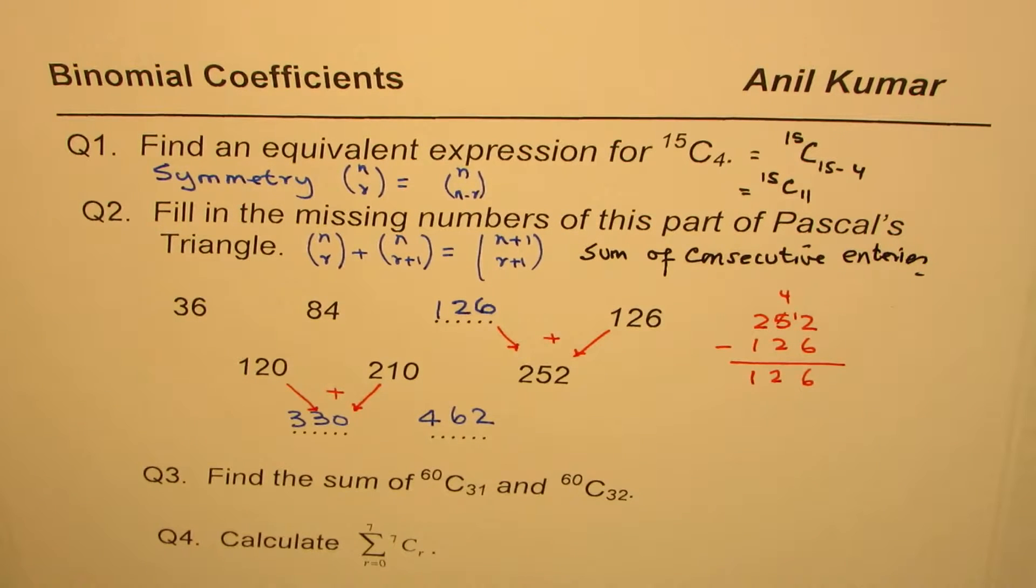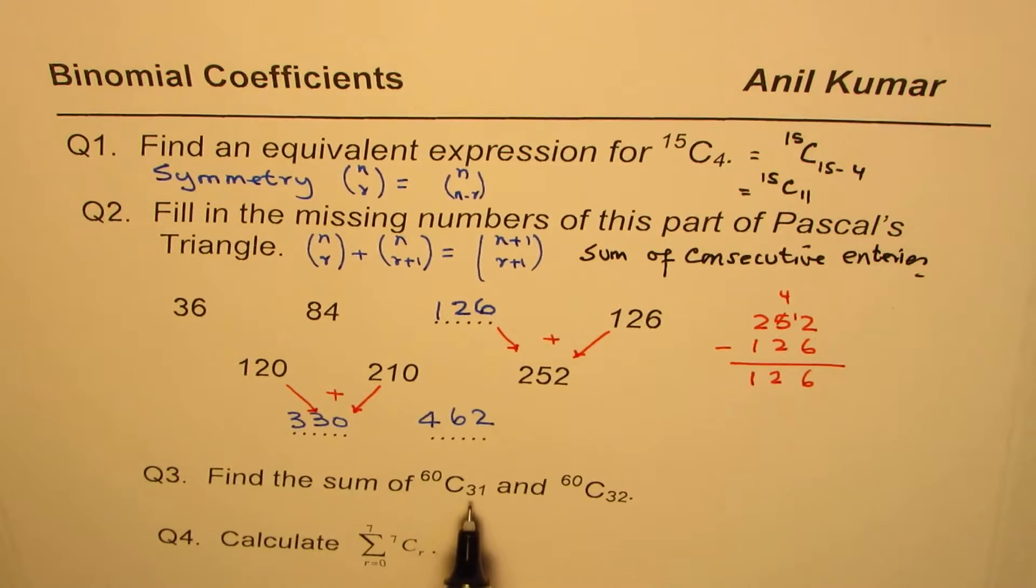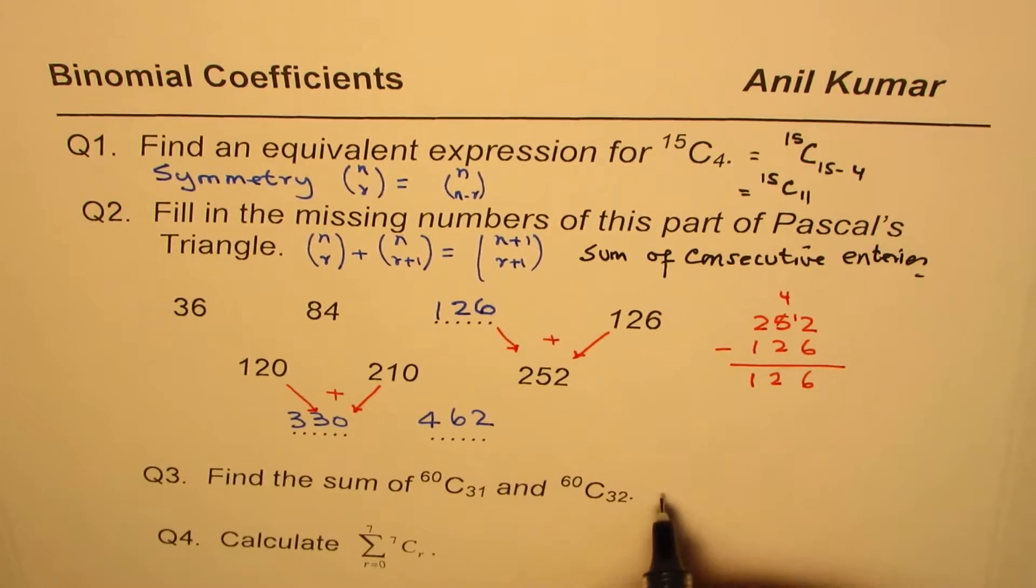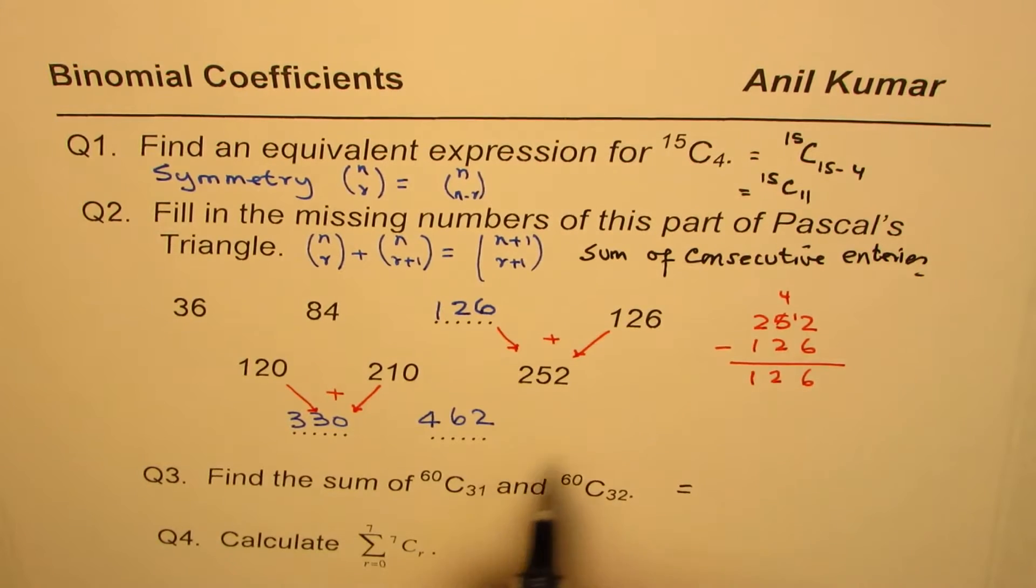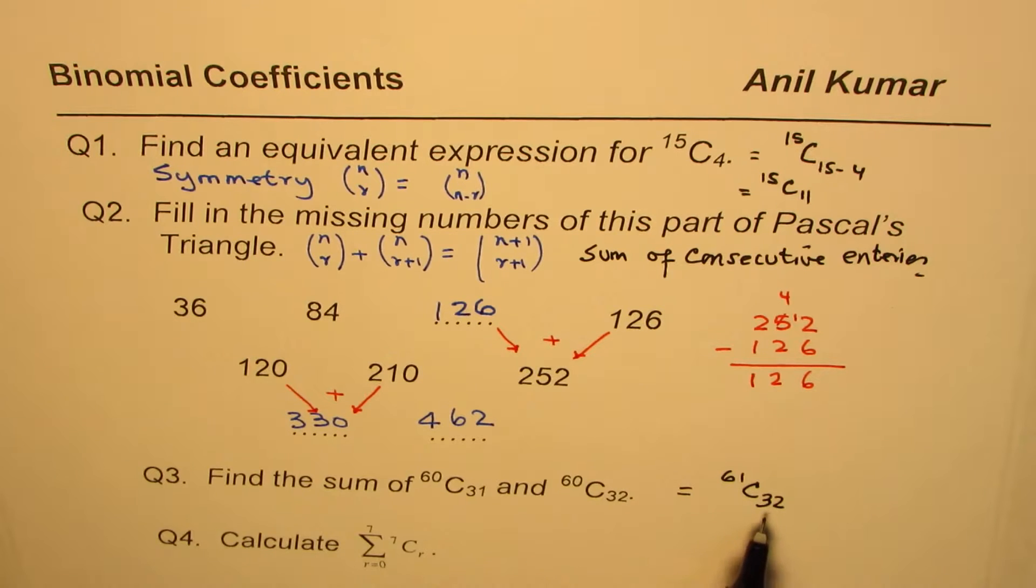The next one here is find the sum of 60 choose 31 and 60 choose 32. Well, the sum of this should equal, using the above property, 61 choose 32. So that is the sum. You can also use calculator to calculate the value, but this answer is good enough.